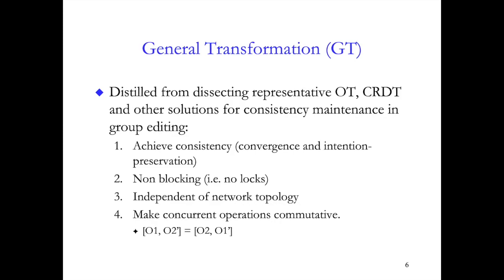In the article, we introduced a generic transformation framework, which captures the following basic requirements for any consistency maintenance solution to collaborative editing, whether it's OT or CRDT. First, it must achieve consistency through convergence and intention preservation. It must accomplish this without blocking users' interactions, and it must be independent of the network topology. Finally, it must ensure that the net effect of applying users' actions in different orders gives the same result, which implies commutativity.